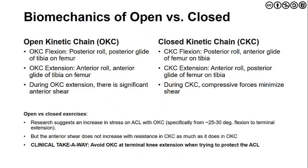Now we can appreciate the biomechanics of the knee in both open kinetic chain and closed kinetic chain. For open kinetic chain flexion and extension, we have posterior roll, anterior roll, and then glide. For closed kinetic chain, the glide is the opposite — you still get anterior and posterior roll, but now you get an anterior glide of the femur on the tibia and a posterior glide of the femur on the tibia, as our reference changes from the tibia to the femur due to the distal segment being fixed. During closed kinetic chain, compressive forces minimize shear — a good thing. During open kinetic chain extension, shear force goes up. The research suggests an increase in stress on the ACL with open kinetic chain from approximately 25 to 30 degrees exists, but anterior shear does not increase as much with closed kinetic chain. The clinical takeaway: avoid open kinetic chain at terminal knee extension in those early phases of ACL rehabilitation when trying to protect the new ACL graft.